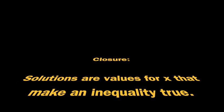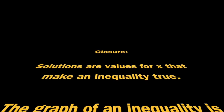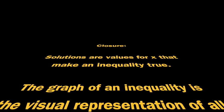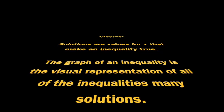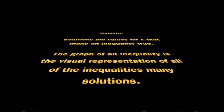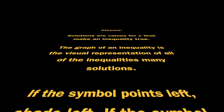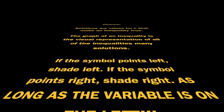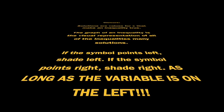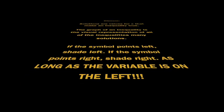So let's highlight some of the takeaways of this introductory lesson. First, solutions are values for x that make an inequality true when they're plugged in. The graph of an inequality is the visual representation of all the inequality's many solutions. If the inequality symbol points to the left, shade to the left. If the symbol points to the right, shade to the right. But that rule only works if the variable's on the left side of the inequality. If you came away with anything else, please write that down now, otherwise we'll see you in the next lesson.